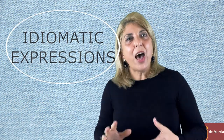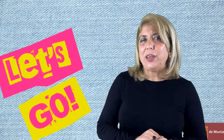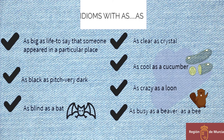Idiomatic expressions are very common and found in all types of English, but mainly in informal ones. We learn the most common ones during the process of writing, reading, or coming across any material in English. When you are at school or in your leisure time, try to use them as many times as you can. Here are some: 'as big as life' — an exaggerated way to state that someone appeared in a particular place; 'as black as pitch' when it is very dark; 'as blind as a bat'; 'as busy as a beaver'; 'as busy as a bee'; 'as clear as crystal'; 'as cool as a cucumber'; 'as crazy as a loon,' and so many more.